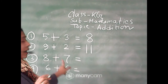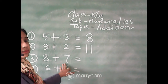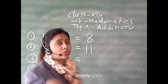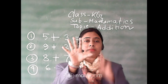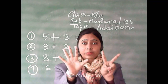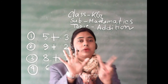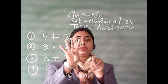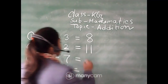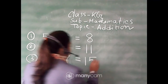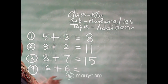Next: eight plus seven. Same thing — the small number is seven, so we show seven fingers: one, two, three, four, five, six, seven. The other number is eight, so counting on from seven: nine, ten, eleven, twelve, thirteen, fourteen, fifteen. So eight plus seven is equal to fifteen.